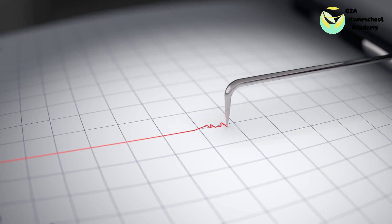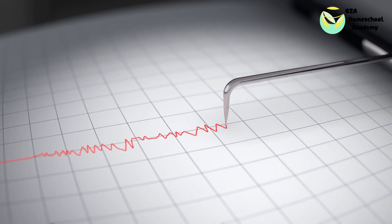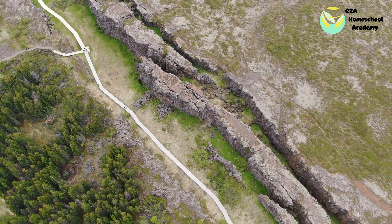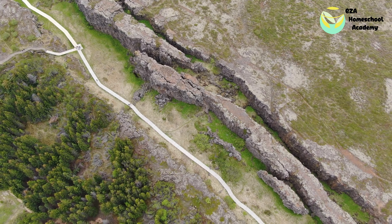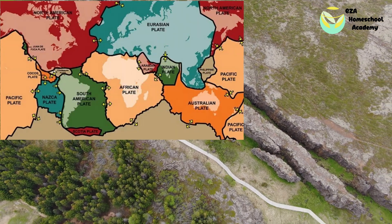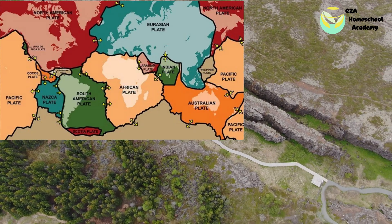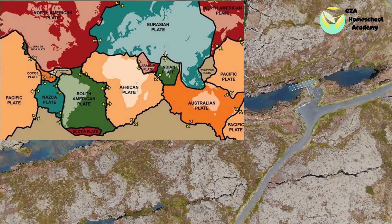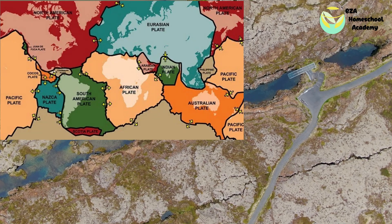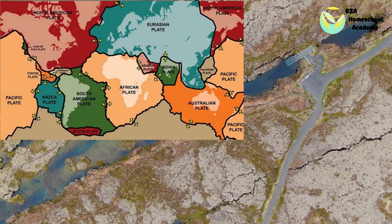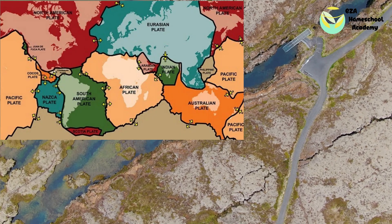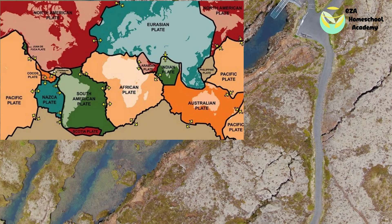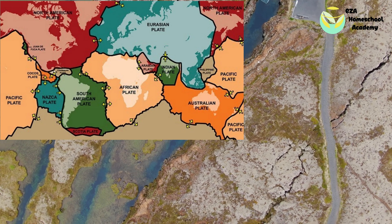Earthquakes have been recorded on every continent on Earth. Though the crust of the Earth is solid, it is not one continuous piece. Instead, it is a group of pieces that fit together like a huge puzzle. These puzzle pieces are called tectonic plates. The locations where the tectonic plates match up are called fault lines. When tectonic plates move, it causes movement at the faults. An earthquake is the sudden movement of Earth's crust at the fault line.